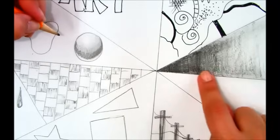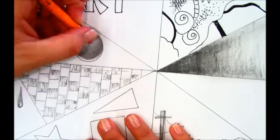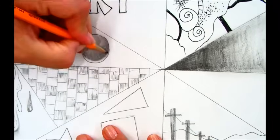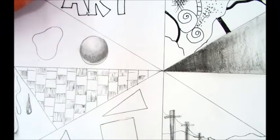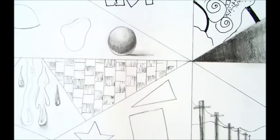So I'm turning a circle into a sphere by grading it, adding a shadow, a middle value, erasing a highlight, and then shading in a cast shadow opposite side of the highlight, and smudging it out.